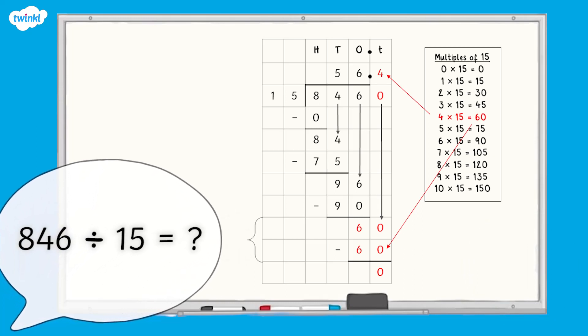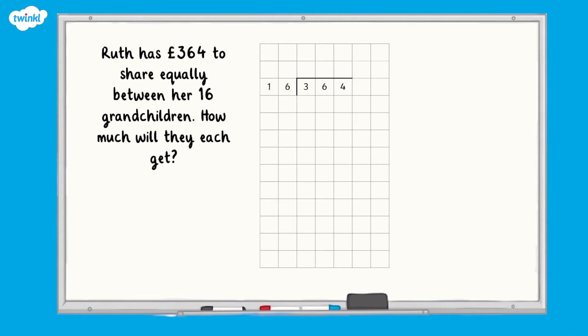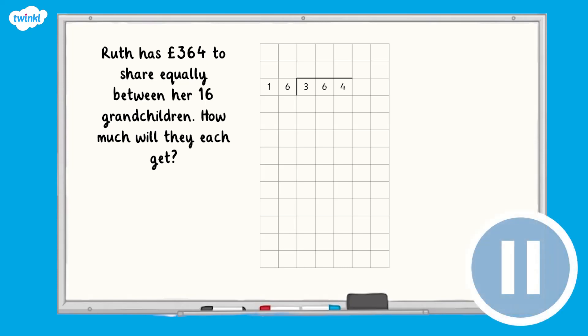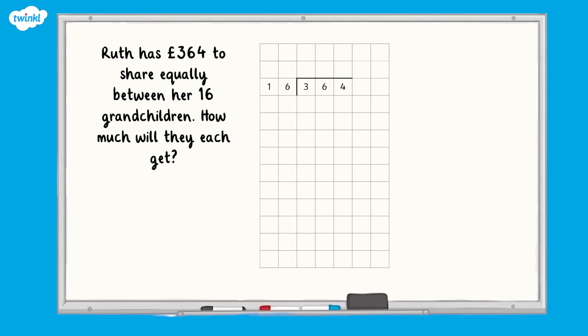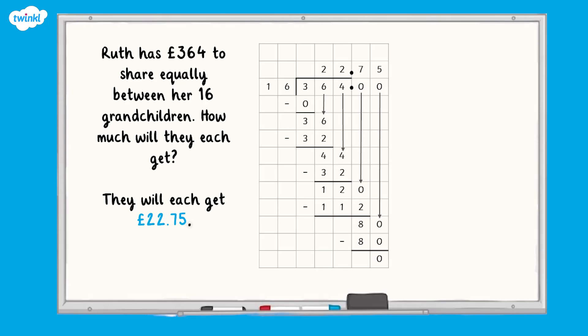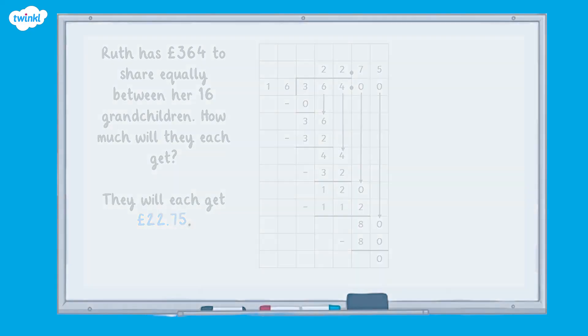Therefore, 846 divided by 15 equals 56.4. Now it's time for a challenge. Can you use the method we've just practised to solve this problem involving money? Ruth has £364 to share equally between her 16 grandchildren. How much will they each get? Be careful — only stop dividing when your remainder is down to zero. Did you keep going and regroup the remaining tenths as hundredths? Each of Ruth's grandchildren got £22.75. I hope that this video has helped you to use the long division method giving the answer as a decimal. Make sure you head to the Twinkle website to check out more division videos. See you next time.